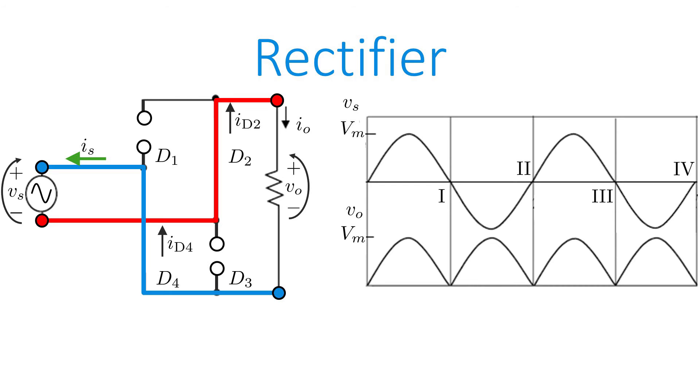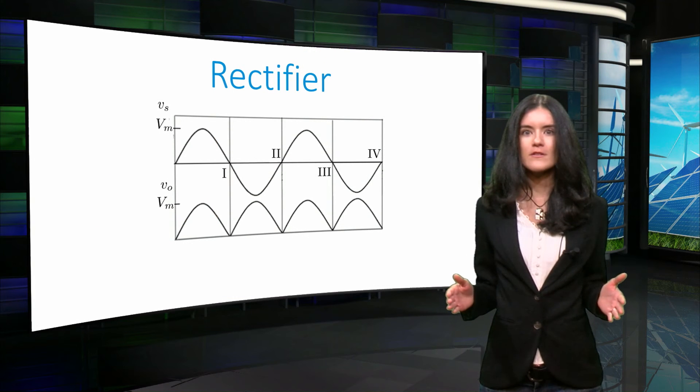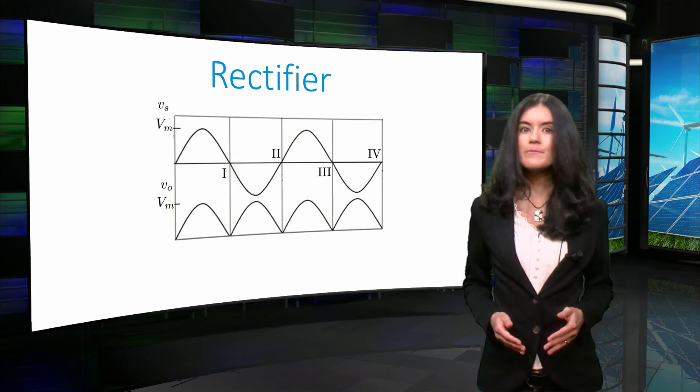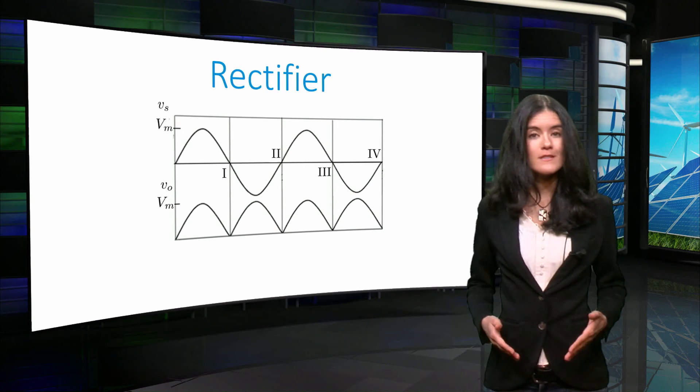As you can recognize, the signal is now positive in all time periods, and if an average line is drawn, you can see that it has a constant positive value. It is therefore said that the voltage is rectified.